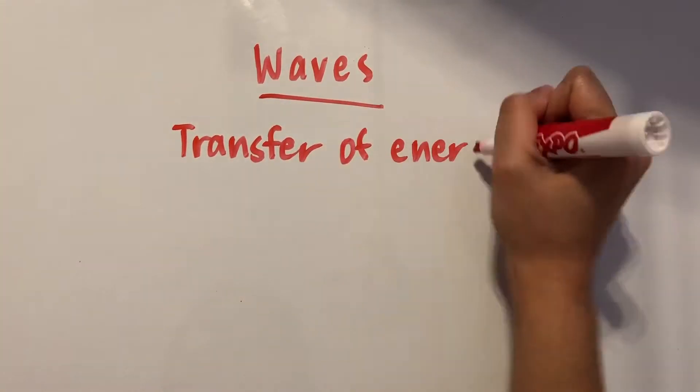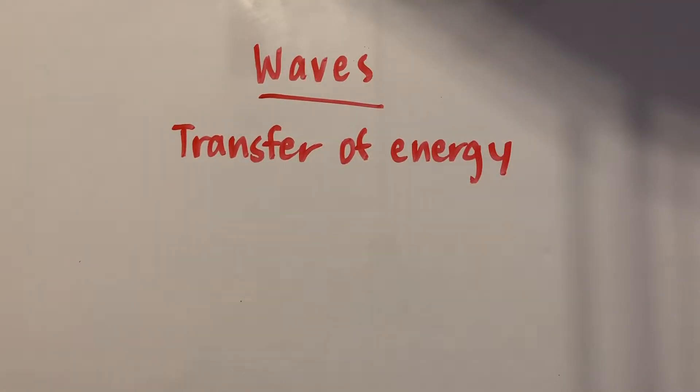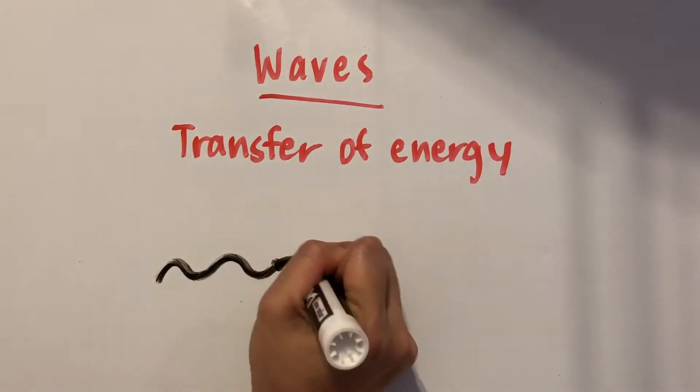Waves are a transfer of energy. They happen when a disturbance propagates or is transmitted through a medium such as air or water.